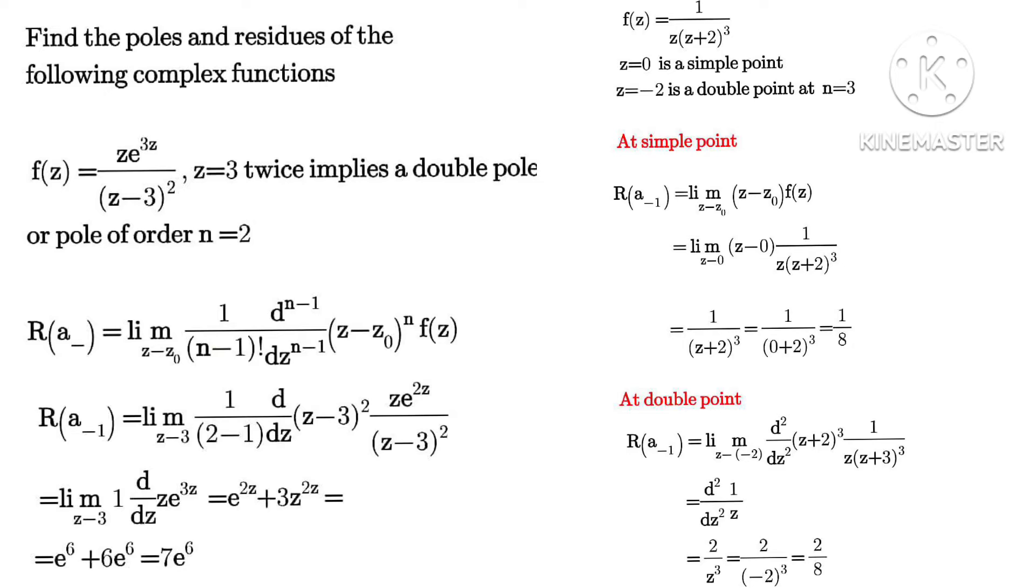Now the second example: we have 1 over z plus (z+2) raised to power 3. Now we get z equals to 0, that's a simple point because the power is 1.